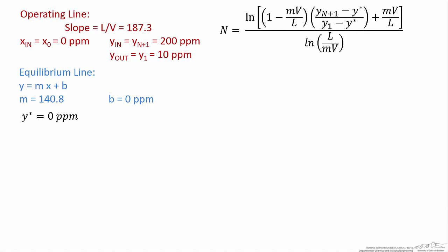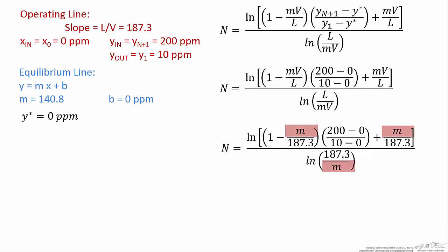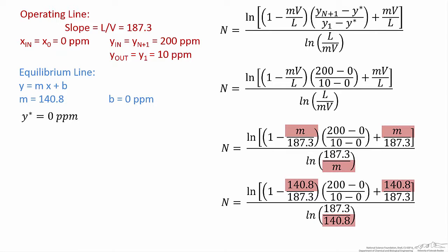Now that we've evaluated that term, let's insert all of the accumulated information into the equation for the number of equilibrium stages. Starting with the compositional information, we insert both the inlet and outlet gas compositions and the y* value we calculated. The L over V term appears in the denominator, and the inverse V over L appears twice in the numerator, represented as 1 over L over V. After inserting those values along with the slope m of the equilibrium line, we evaluate the entire expression. The Kremser equation tells us that we need 6.1 equilibrium stages.